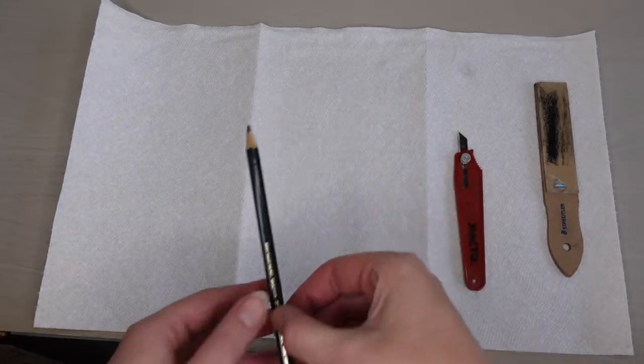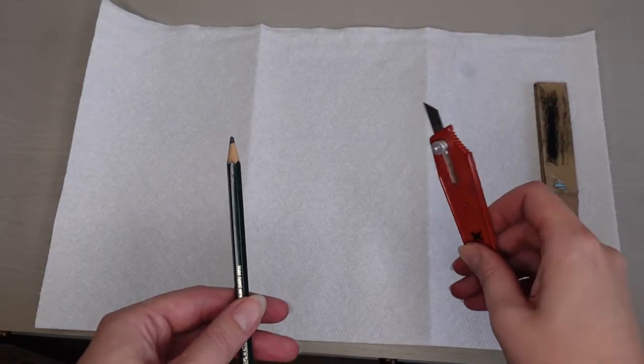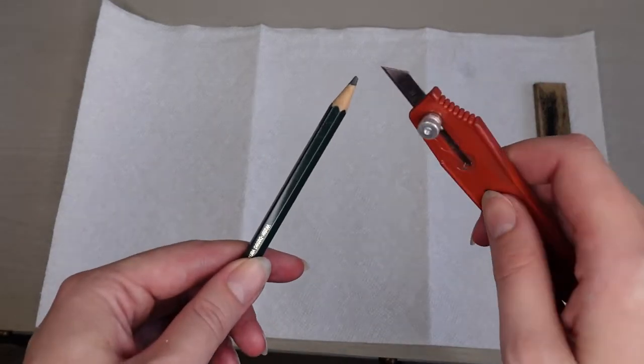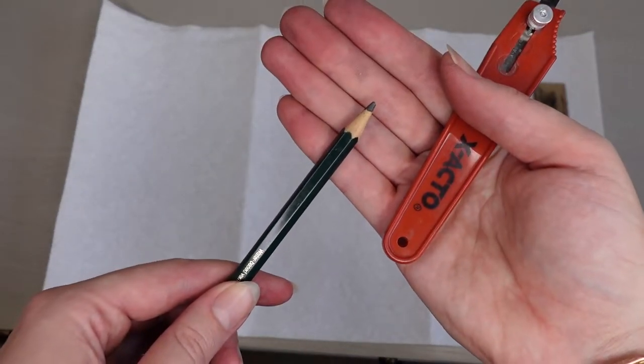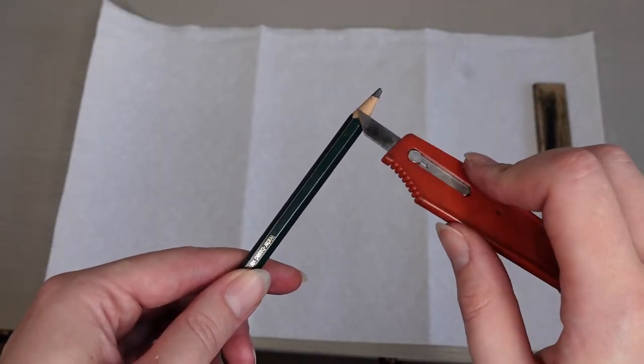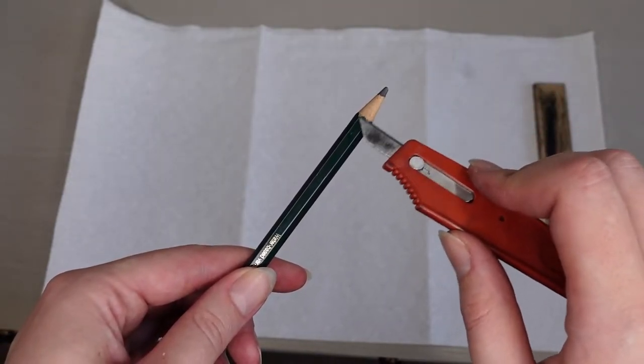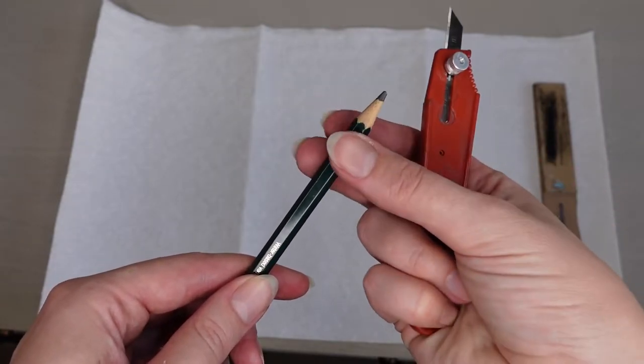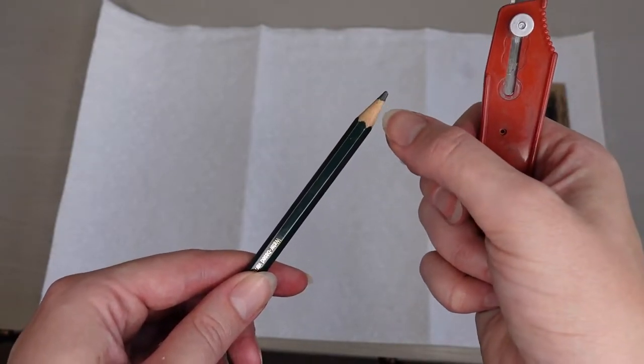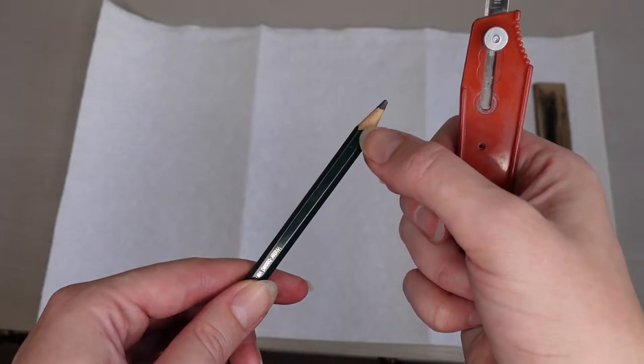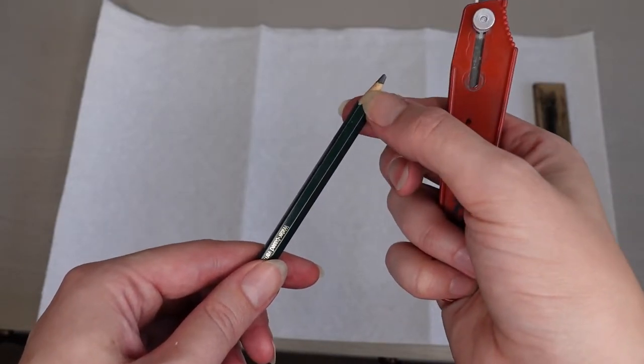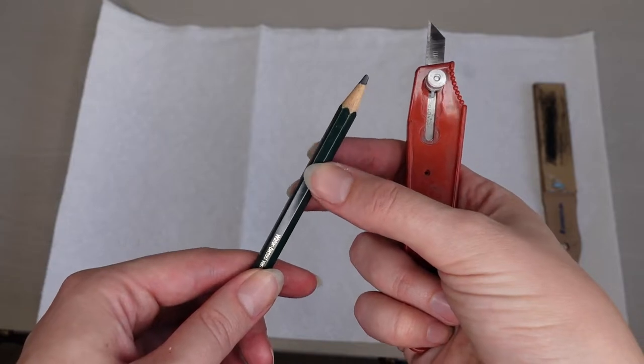But you want to start out with using the knife. So what we're going to do here is hopefully you can see the knife is going to trim away the excess wood from the pencil. So you want to attempt not to dig into the lead, but just trim away the wood of the graphite pencil.